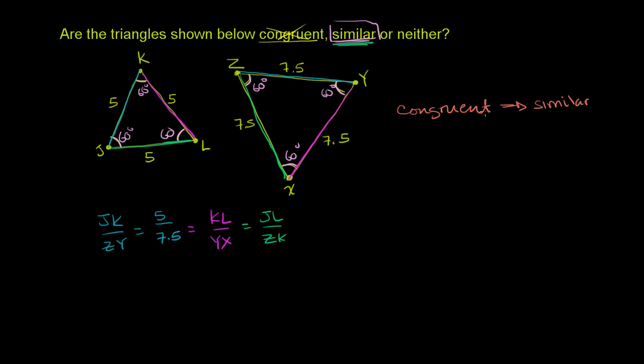If two triangles are similar, they might be congruent, but not necessarily. One way to think about it, if you think about the universe of similar triangles, congruent triangles are a subset of that. So everything that's congruent is similar. But two triangles that are similar to each other may or may not be congruent.